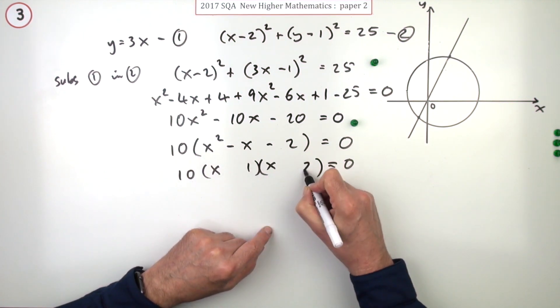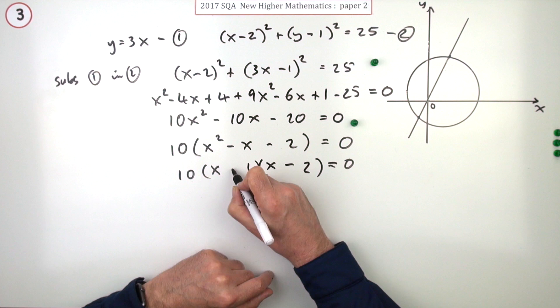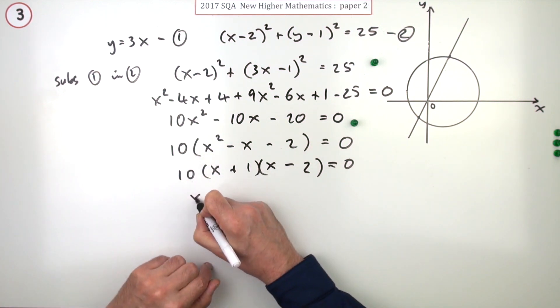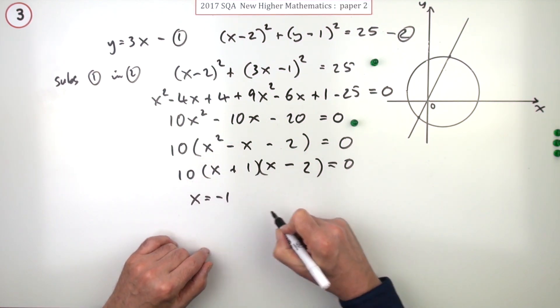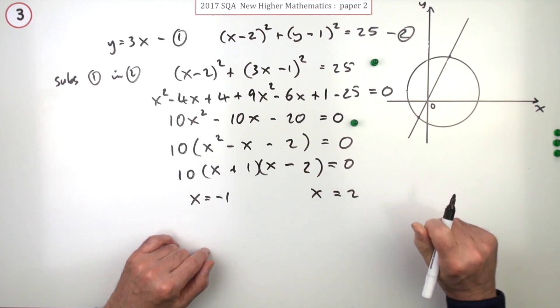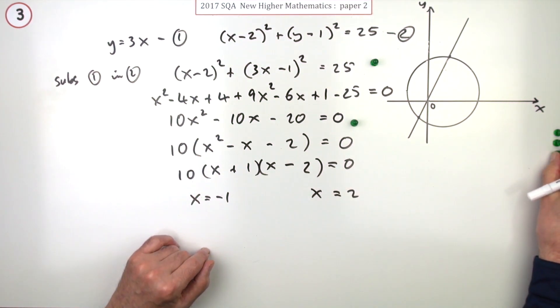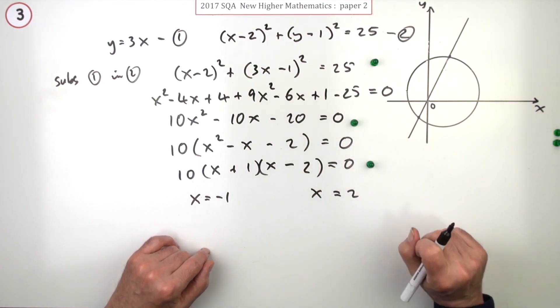So what have we got? 10(x times x, 1 times 2) - the middle's negative so that must be negative plus one. So there are two answers: x equals negative one, x equals two.